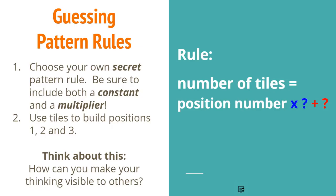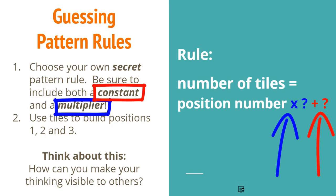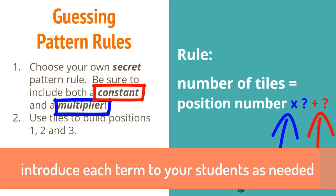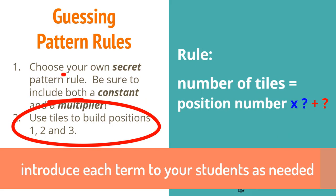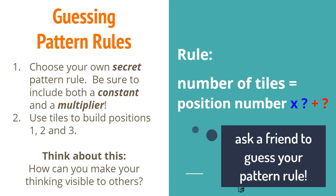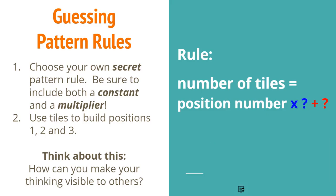The part of your pattern that is multiplied by is called the multiplier. The part of your pattern that did not change or was constant is called a constant. Now I want you to use those two ideas and two colors of tiles to create your own secret pattern rule. Make your thinking as visible to others as you can, then ask a friend to see if they can guess your pattern rule. You can ask your friend to build a pattern and you can guess their pattern rule.